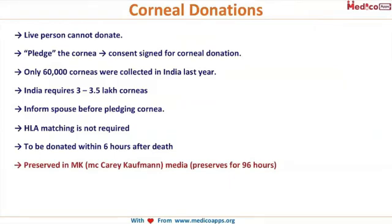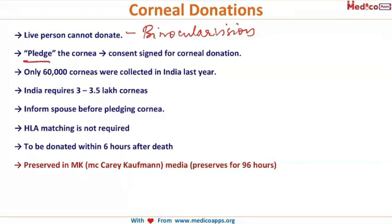A live person cannot donate a cornea because both corneas are required for binocular vision, so donation can only occur after the person is deceased. The procedure requires the patient to pledge their cornea before death and sign a consent stating they are willing to donate. They must also inform their spouse that this pledge has been made, to ensure the corneas are actually donated.